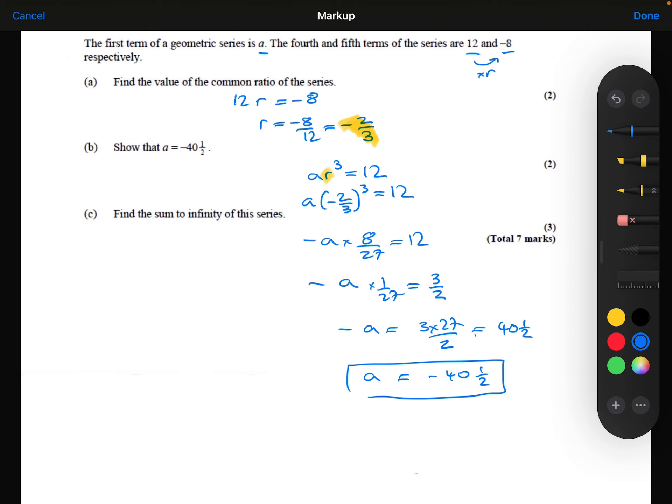And then part C, find the sum to infinity of this series. The sum to infinity formula, which you are given in the formula booklet, is A divided by 1 minus R, as long as R is less than 1. Which it is, we saw that it's minus two thirds. So that is between minus one and one. So the sum to infinity does exist.